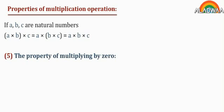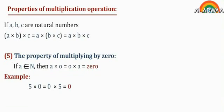Property 5: the property of multiplying by 0. If A belongs to the set N, then A times 0 equals 0 times A equals 0. For example, 5 times 0 equals 0 times 5 equals 0.